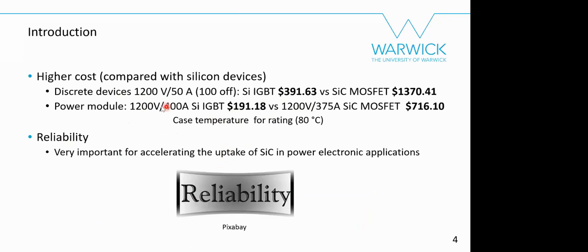A quick cost comparison: for discrete 1200 V / 50 A devices buying 100 chips, a silicon IGBT is around $400 while a silicon carbide MOSFET is around $1400. For modules at 1200 V / 400 A, silicon is around $200 versus $700 for silicon carbide. There is a considerable price difference. Reliability is also a very important factor for accelerating the uptake of silicon carbide in power electronic applications — you want to show it is even more reliable than silicon.